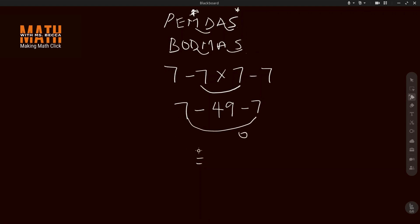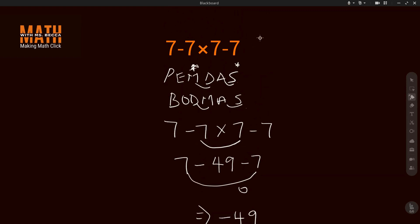So our answer will be negative 49. So the answer to 7 minus 7 times 7 minus 7 is negative 49.